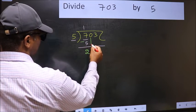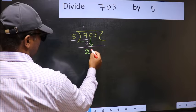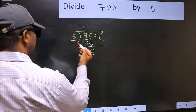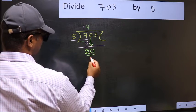After this, bring down the beside number. So 0 down. Now 20. When do we get 20 in 5 table? 5 fours, 20.